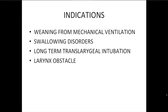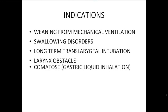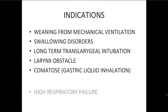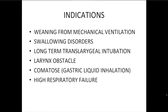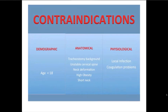Further indications include comatose patients and high respiratory failure. Contraindications are important: tracheostomy should not be performed on patients under 18 years of age. There should be no prior tracheostomy background, no unstable cervical spine — since hyperextension is required during the procedure — and no high obesity or short neck.